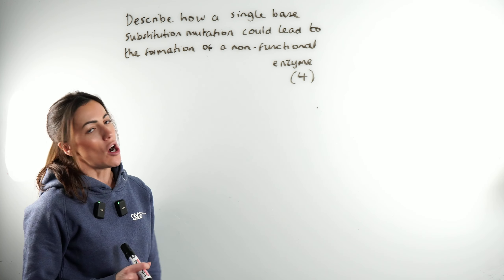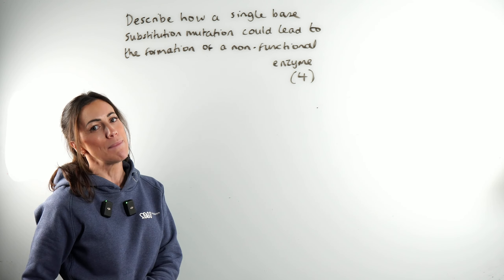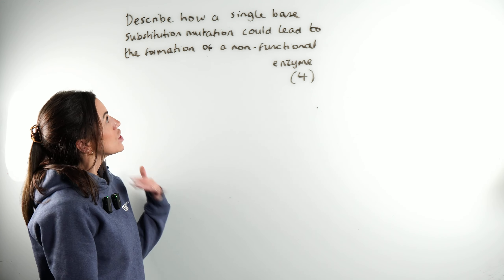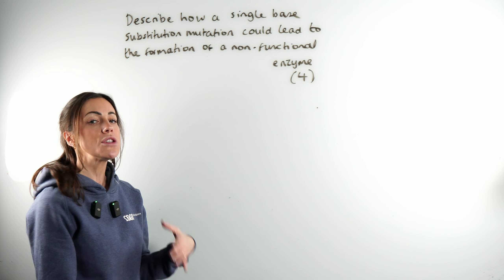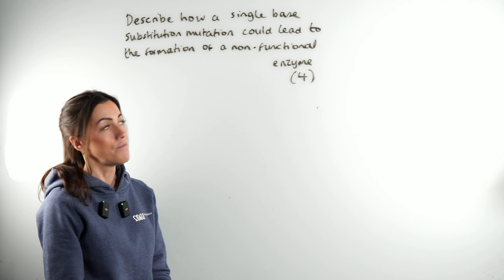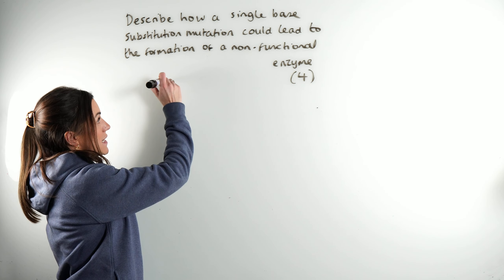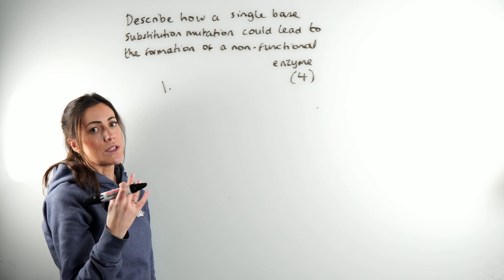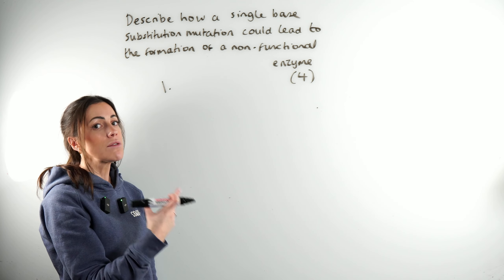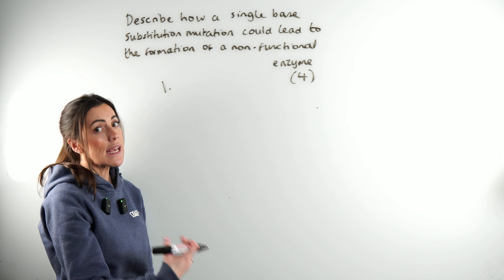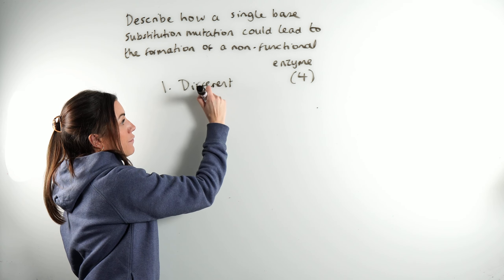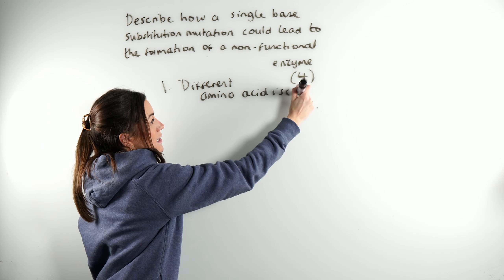Let's look at this question on a really important and fundamental topic in biology: linking DNA with protein. We've got the idea that a single base substitution mutation can lead to the production of a non-functioning enzyme. If you have a single base substitution mutation, one of the bases is substituted or switched for a nucleotide with a different base, so potentially that could code for a different amino acid.